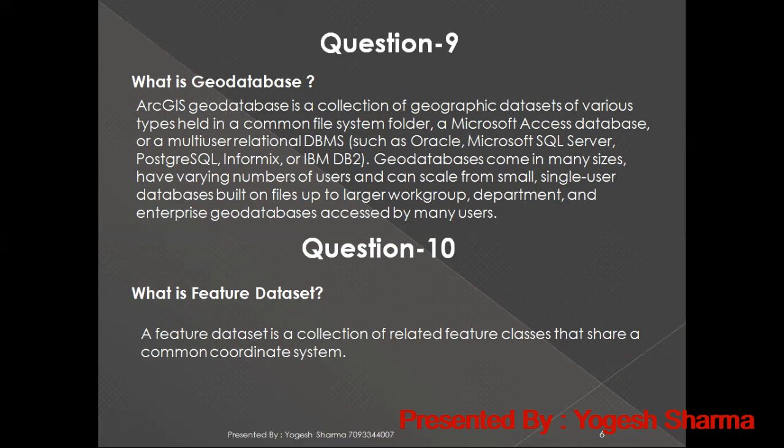What is a feature dataset? This is a very important interview question. The most important thing to include in your answer is the phrase 'common coordinate system.' A feature dataset is a collection of feature classes that share the same coordinate system. All feature classes kept in one feature dataset must have the same coordinate system.